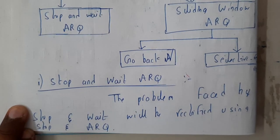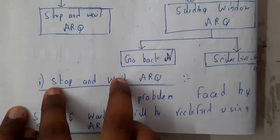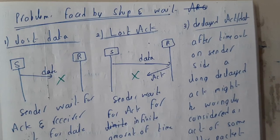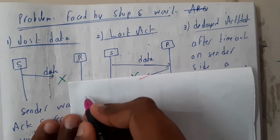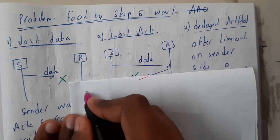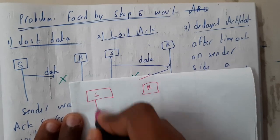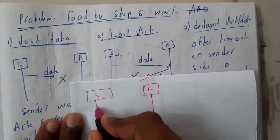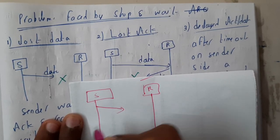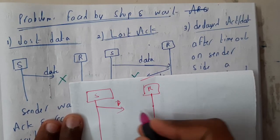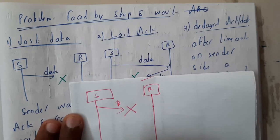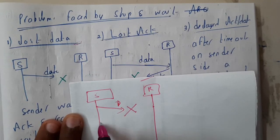The problems faced by Stop-and-Wait will be rectified using Stop-and-Wait ARQ. We didn't discuss the problems of Stop-and-Wait in the previous lecture, so let us discuss them now. Let us assume there are three different cases. The sender sends data but due to some technical issue the data has not reached the receiver — so this data is lost.